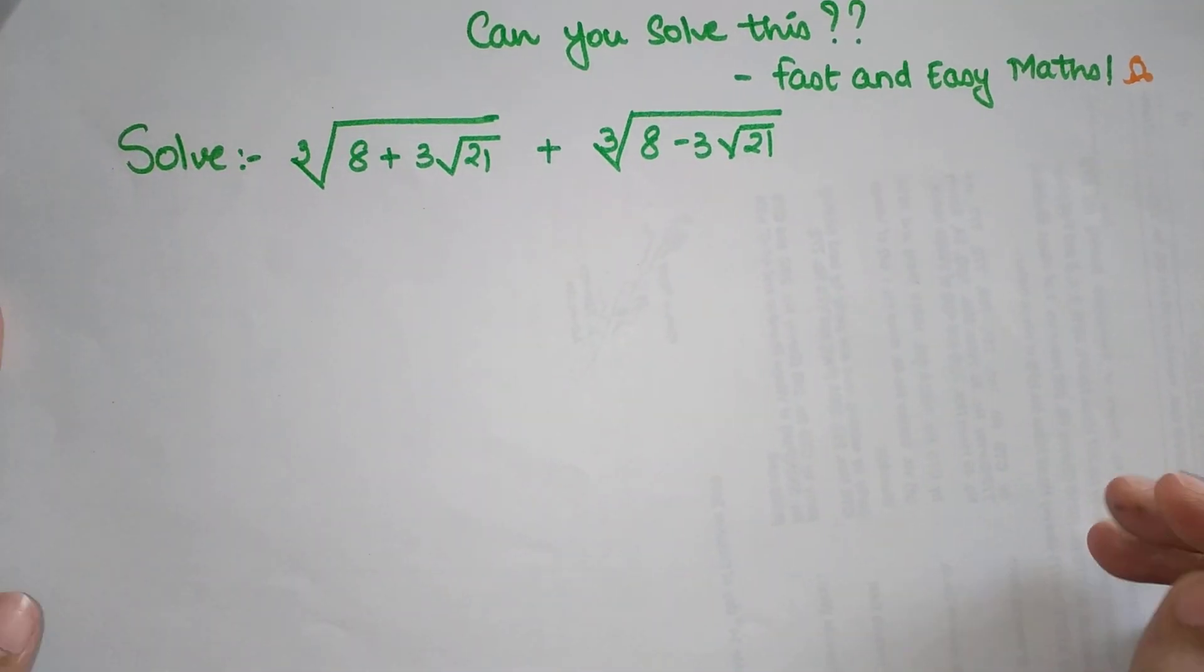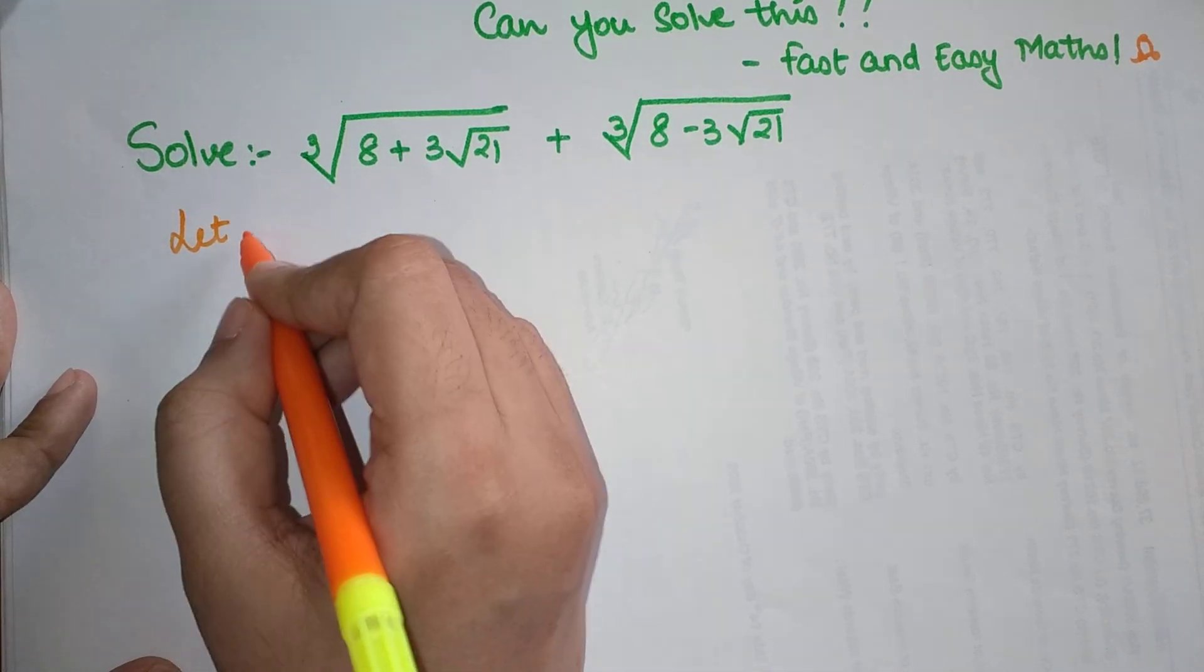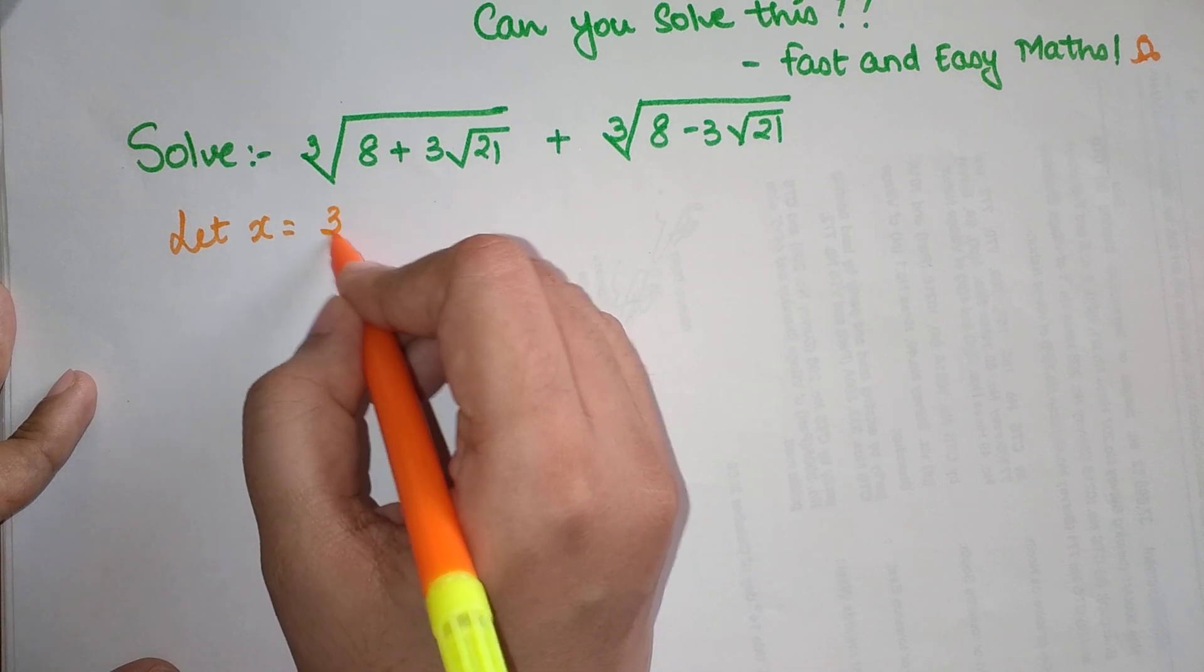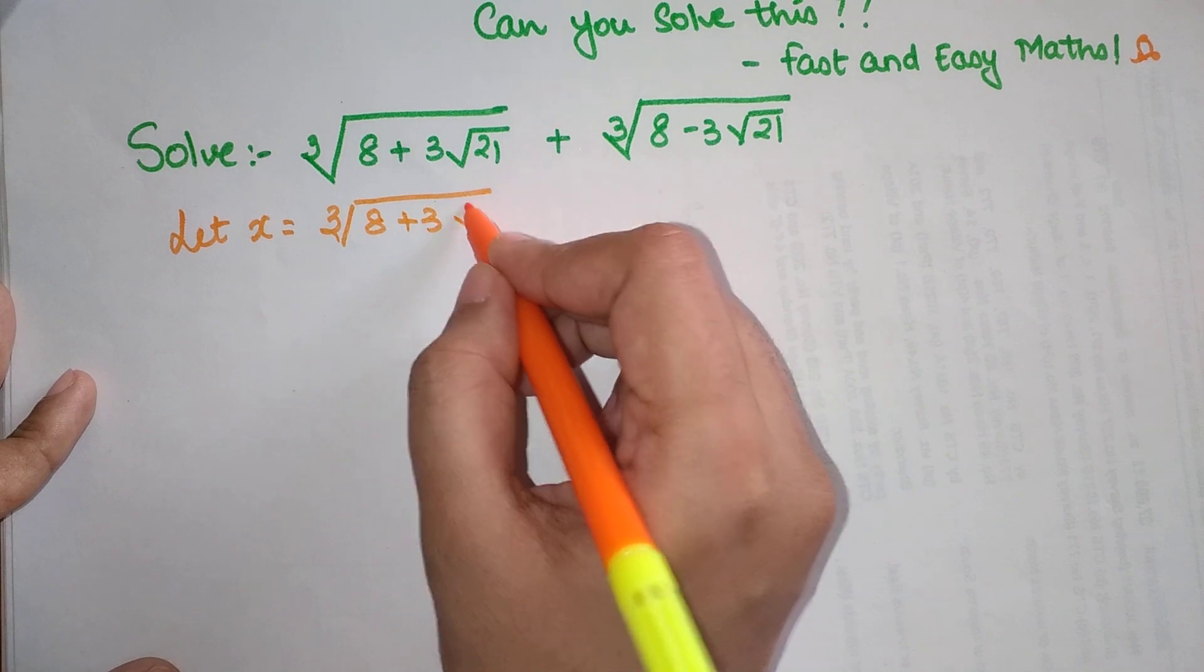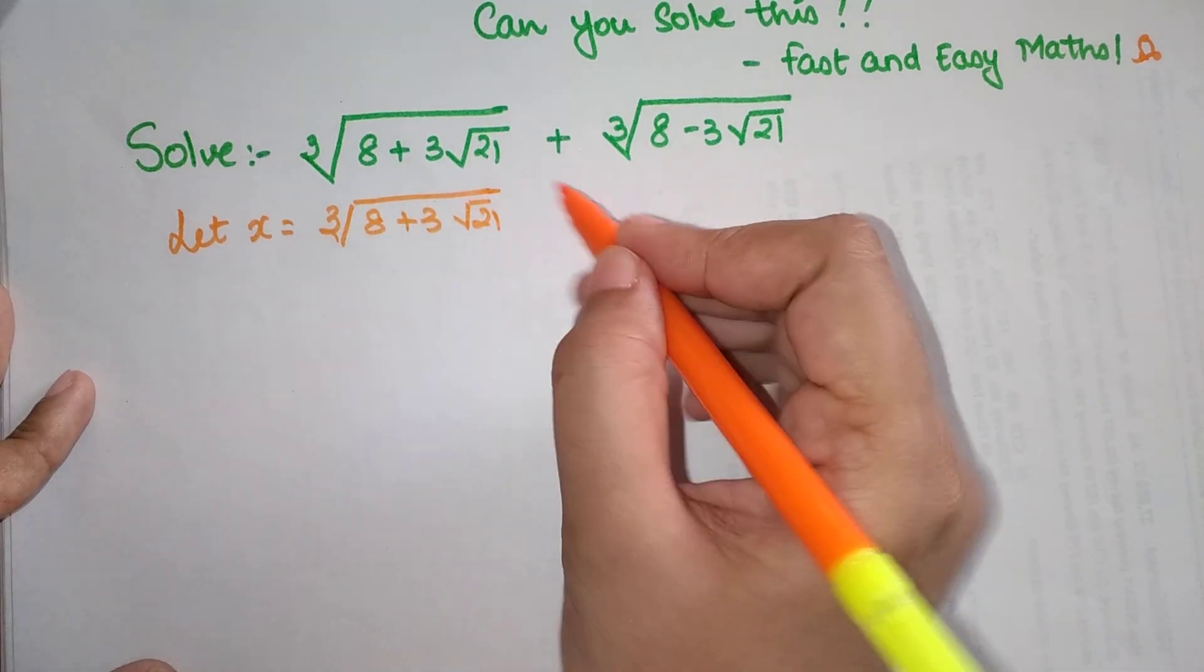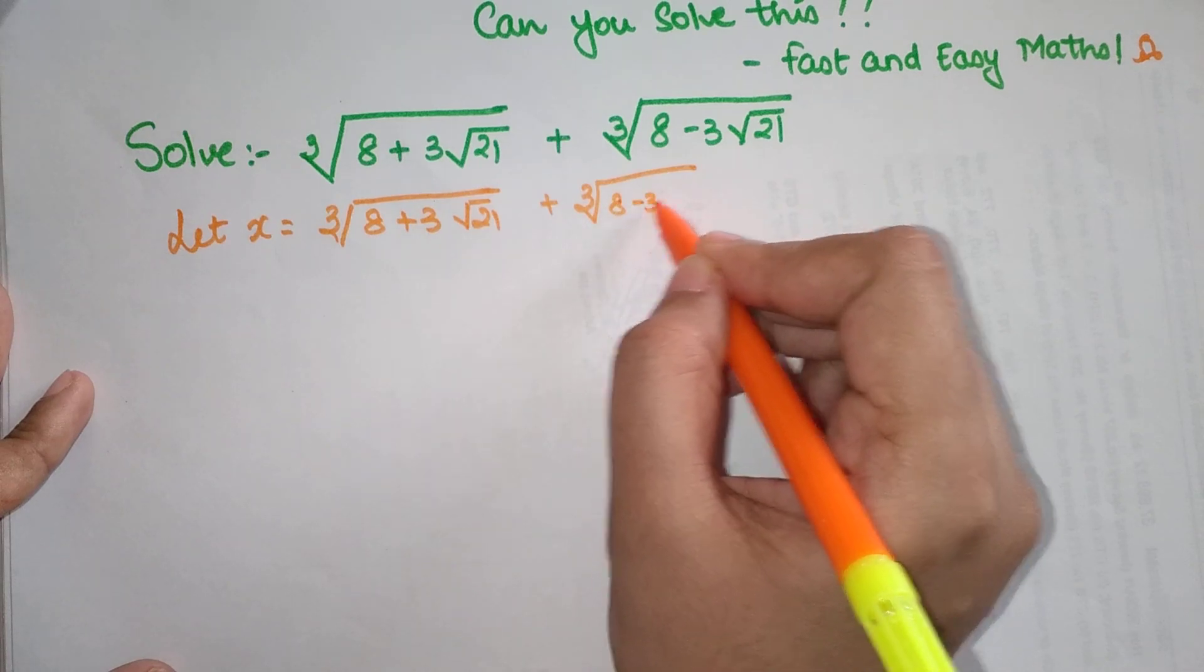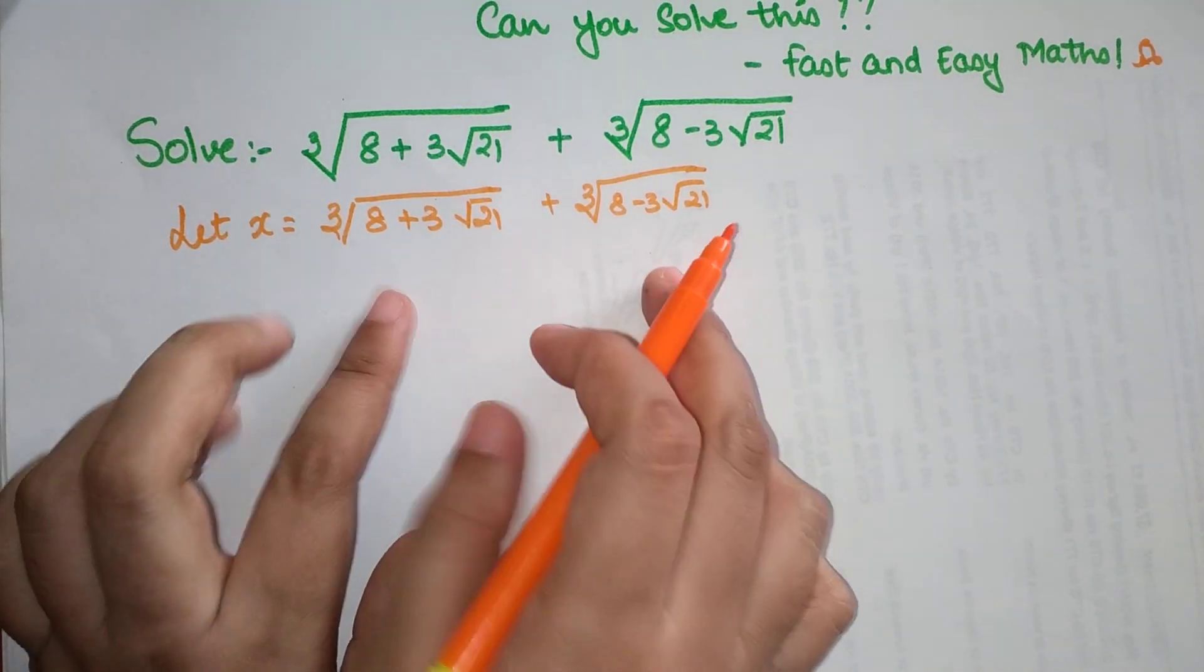Now I'm going to start solving. We'll say that let x equals cube root of 8 plus 3 root 21 plus cube root of 8 minus 3 root 21.